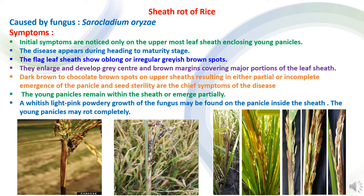Sheath rot of rice is caused by the fungus Sarocladium oryzae. Symptoms are found on the uppermost leaf sheath enclosing young panicles, and the disease appears from heading to maturity stage. The flag leaf sheath has oblong or irregular grayish-brown spots that enlarge and develop a grayish center with brown margins, covering major parts of the leaf sheath. The disease may result in partial or incomplete emergence of panicles, and seed sterility is the main symptom. Young panicles may rot completely, and whitish, light-pink powdery fungal growth may be found on the panicle inside the leaf sheath.